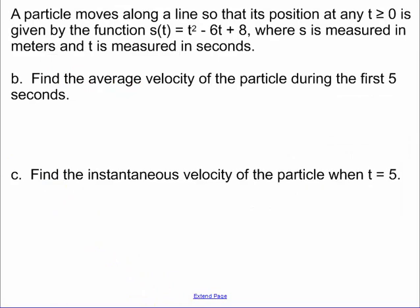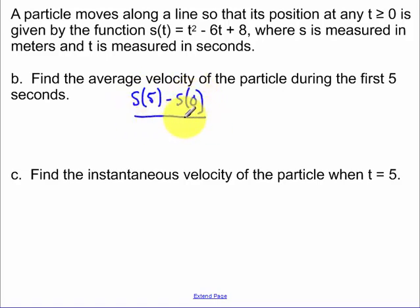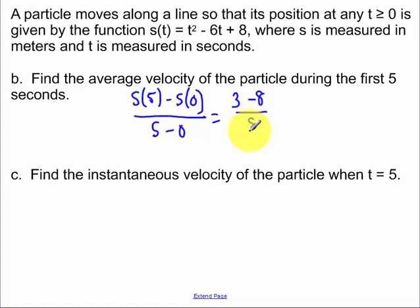To find the average velocity during the first five seconds, average velocity is the slope: s(5) minus s(0) over five minus zero. s(5) equals three and s(0) equals eight, giving three minus eight over five, which simplifies to negative one meter per second.